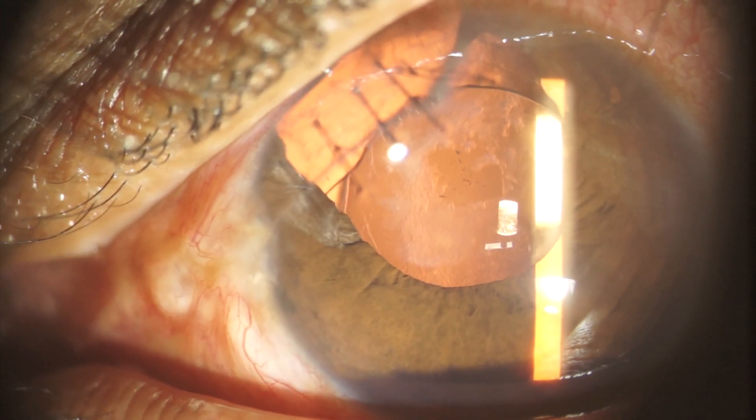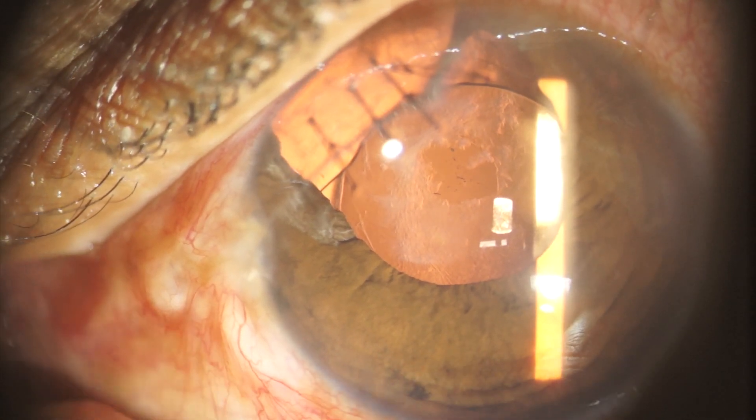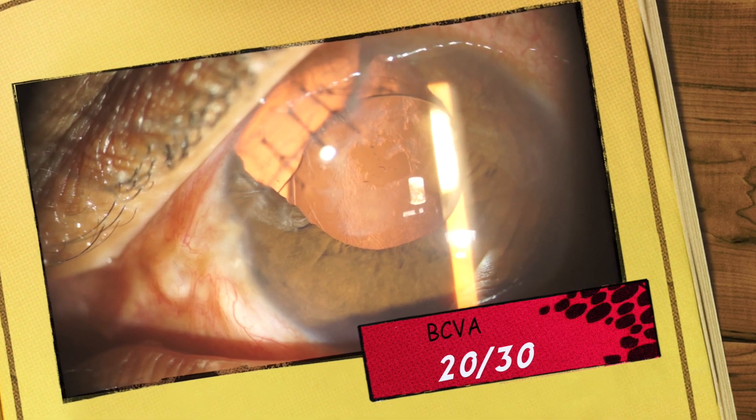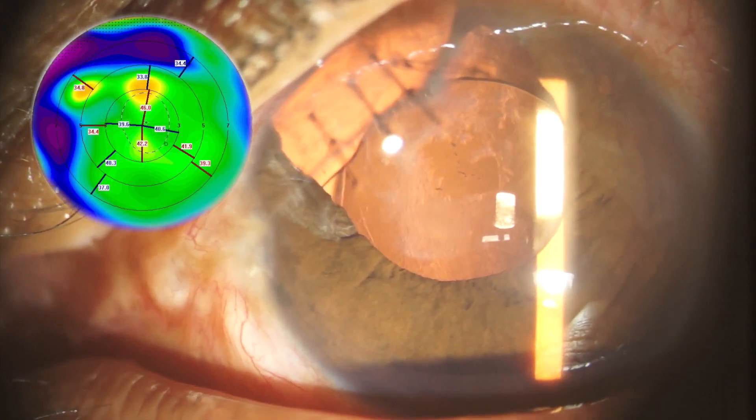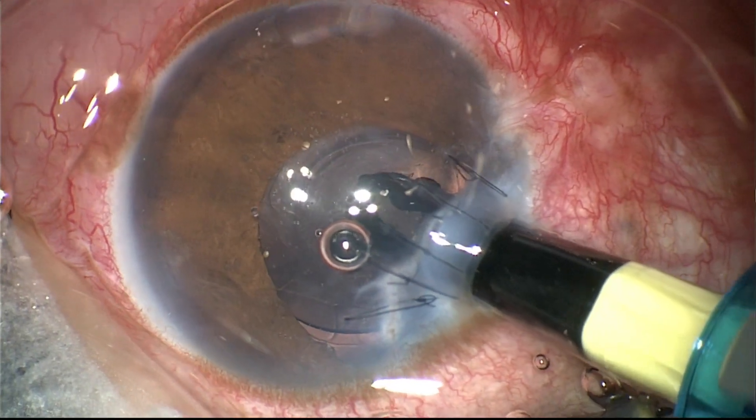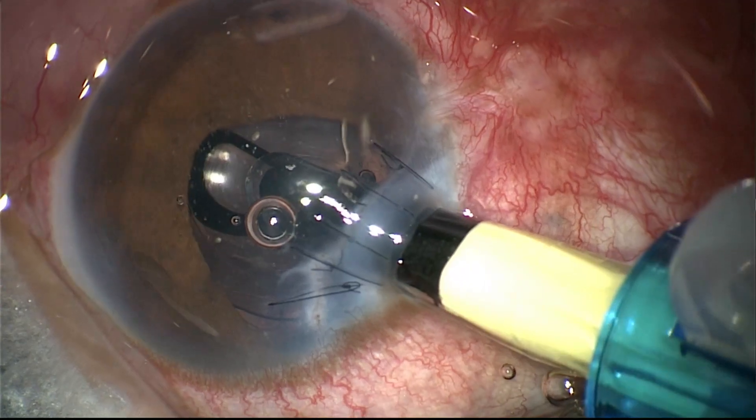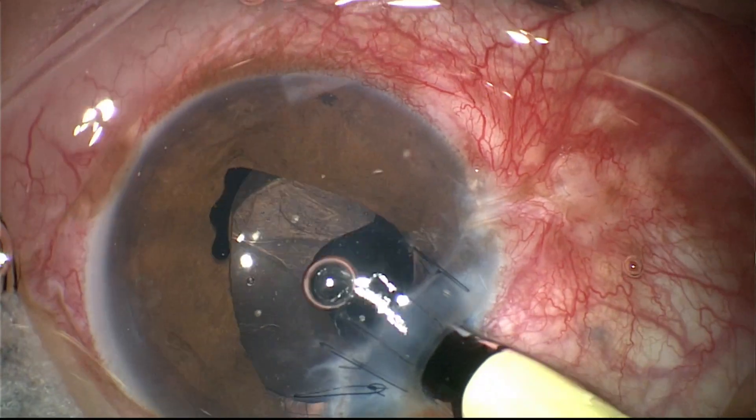However, after this initial treatment, he complained of disturbing glare and poor visual acuity, due to the combination of a highly aberrated cornea and a large pupil. The incision was made posterior to the corneal laceration, and the implant is carefully directed to the ciliary sulcus.